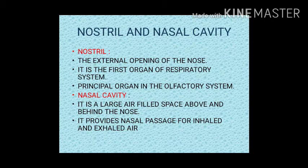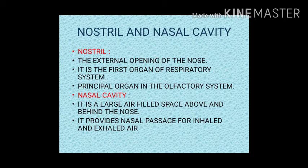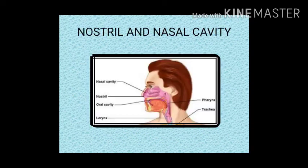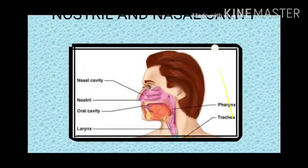The nostril is the external opening of the nose. It is the first organ of the respiratory system and the principal organ in the olfactory system. The nasal cavity is a large air-filled space above and behind the nose; it provides a nasal passage for inhaled and exhaled air. This diagram shows the nasal cavity, nostril, pharynx, and larynx.